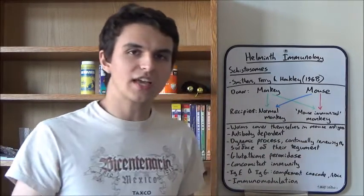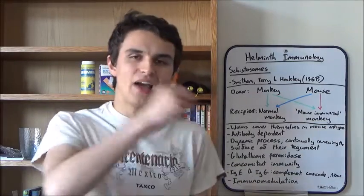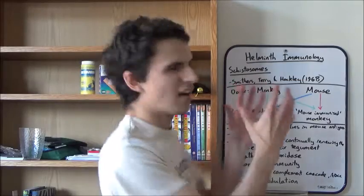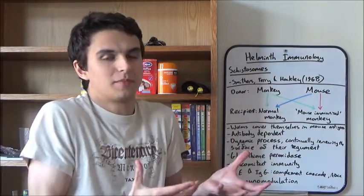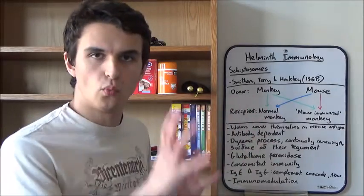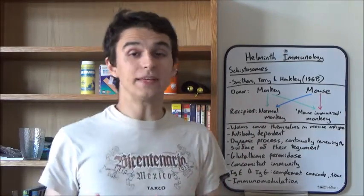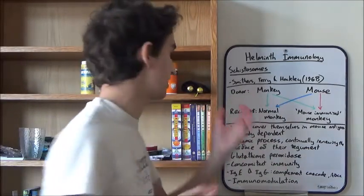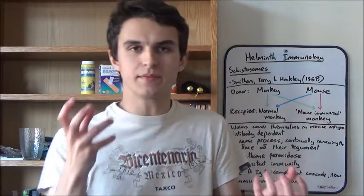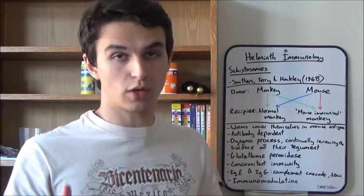Now, today, we're going to be looking at helminths, and how helminths escape the immune response. Now, helminths, as we've said before, not a very taxonomically useful term. It's referring to all parasitic worms. And, mainly, we're looking at two phyla. We're looking at the platyhelminths, or the flatworms, and the nematodes, also known as the roundworms.